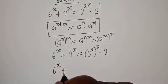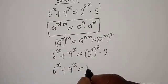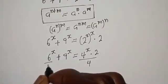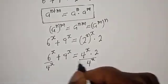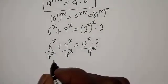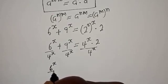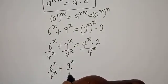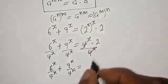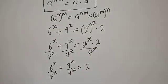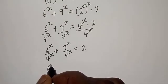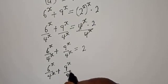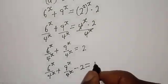6 raised to power s plus 9 raised to power s is equal to 4 raised to power s multiplied by 2. Let's divide both sides by 4 raised to power s. Then we have 6 raised to power s over 4 raised to power s plus 9 raised to power s over 4 raised to power s is equal to 2.